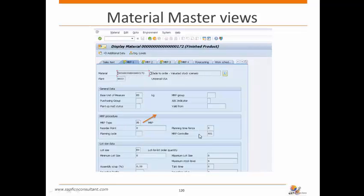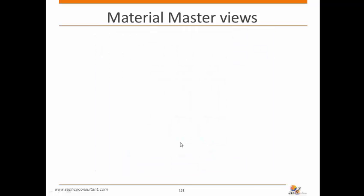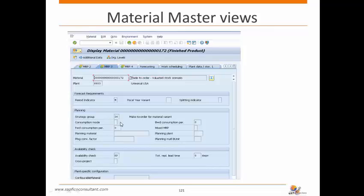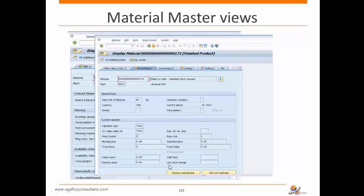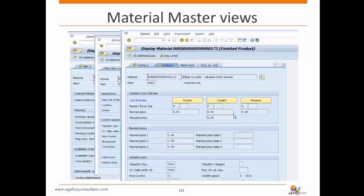In the material master MRP3 view, MRP type PD is set, and strategy group 26 (make to order for material variance) is updated. This strategy group links to the requirement type, which links internally to the requirement class. In the accounting view, the valuation class is updated but there is no standard price — the standard cost field is blank. We don't calculate standard cost in the material master for sales order costing; the system will automatically calculate cost when the sales order is created.